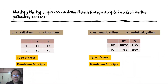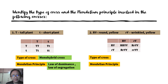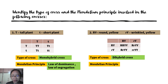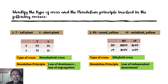Let's have a short activity. Identify the type of cross and the Mendelian principle involved in the following crosses. For number one, T for tall plant and small t for short plant — this is a monohybrid cross, and the Mendelian principle involved is the Law of Dominance or the Law of Segregation. For number two, we have capital R capital Y for round yellow, and small r capital Y for wrinkled yellow — this is a dihybrid cross, and since it is a dihybrid cross, the Mendelian principle involved is the Law of Independent Assortment.